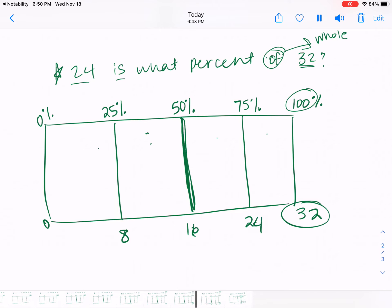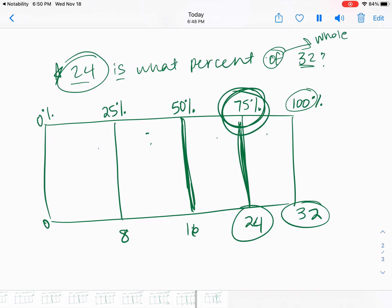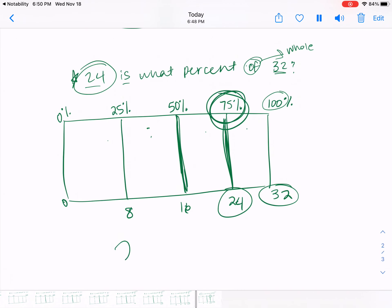So 8, 16, 24. Now I have to find where it matches up with 24 which is right here. The percent that matches up with it is 75. So that's how I figured out that 24 is 75 percent of 32.